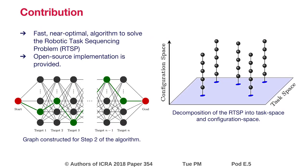Our contribution in this paper is twofold. First, we propose a fast near-optimal algorithm to solve the robotic task sequencing problem. The key to our approach is to exploit the distinction between task space and configuration space.